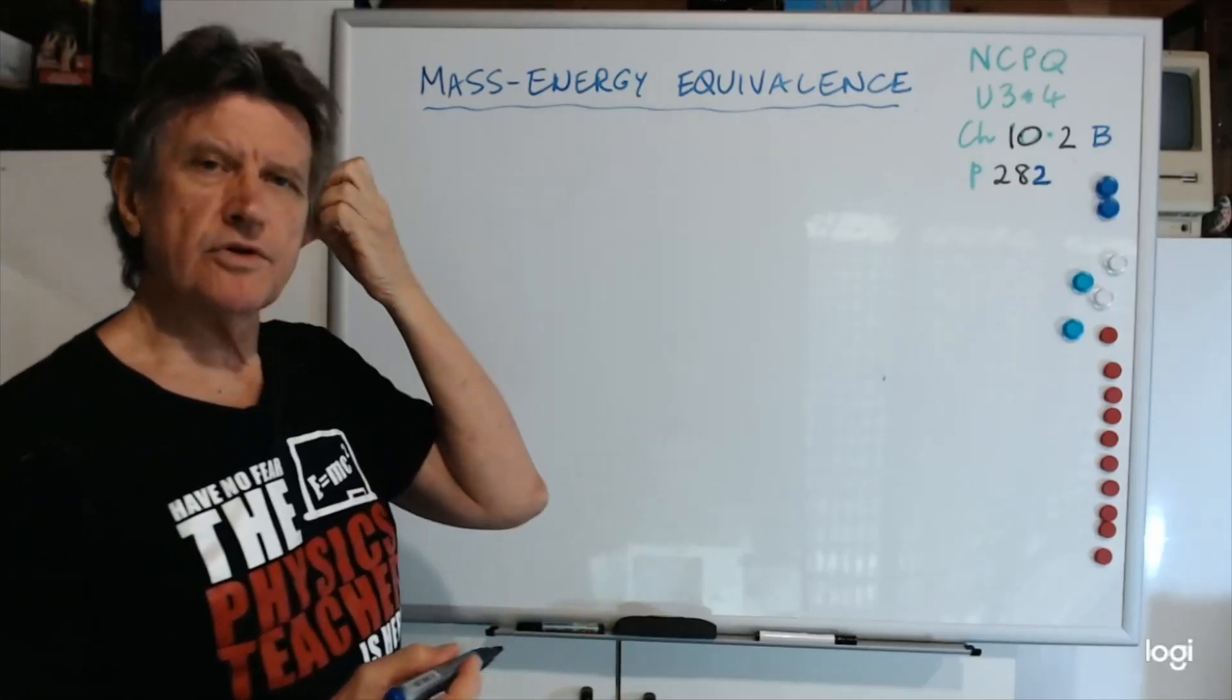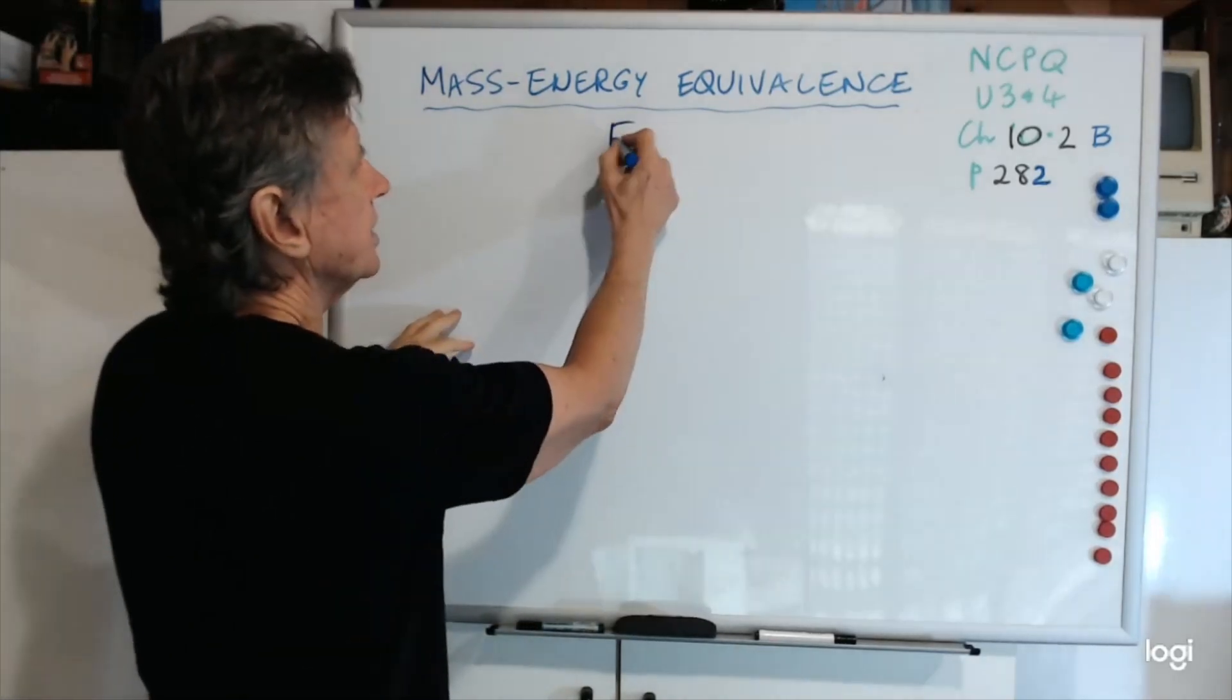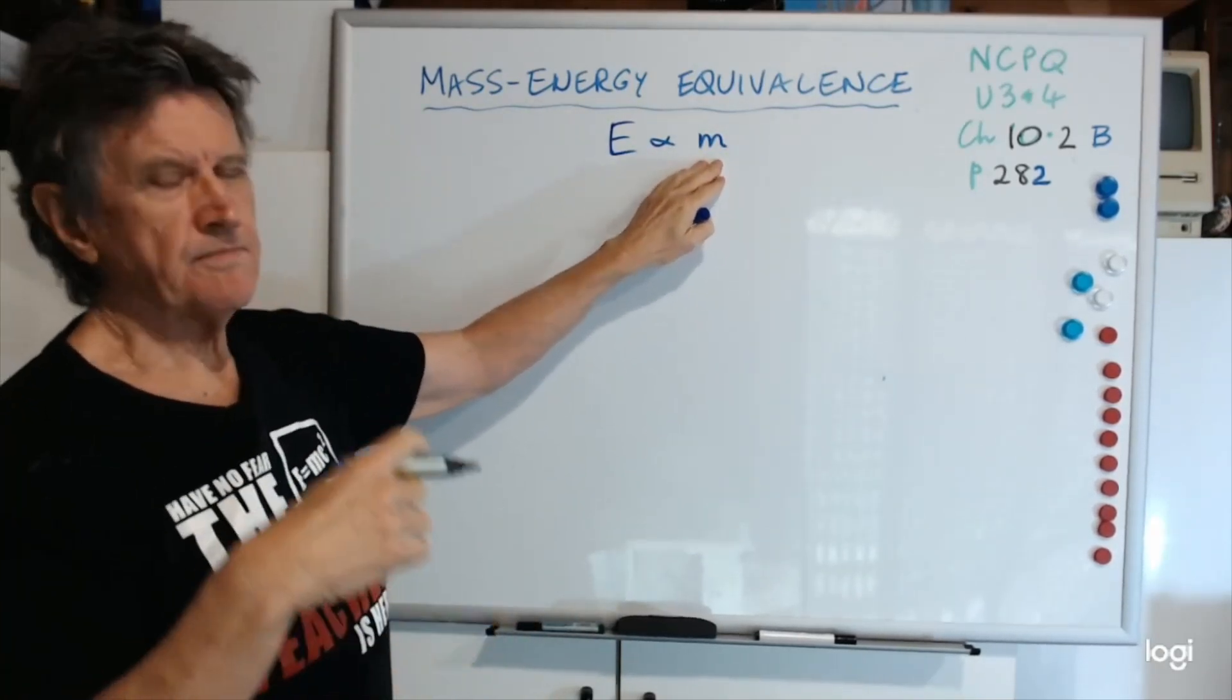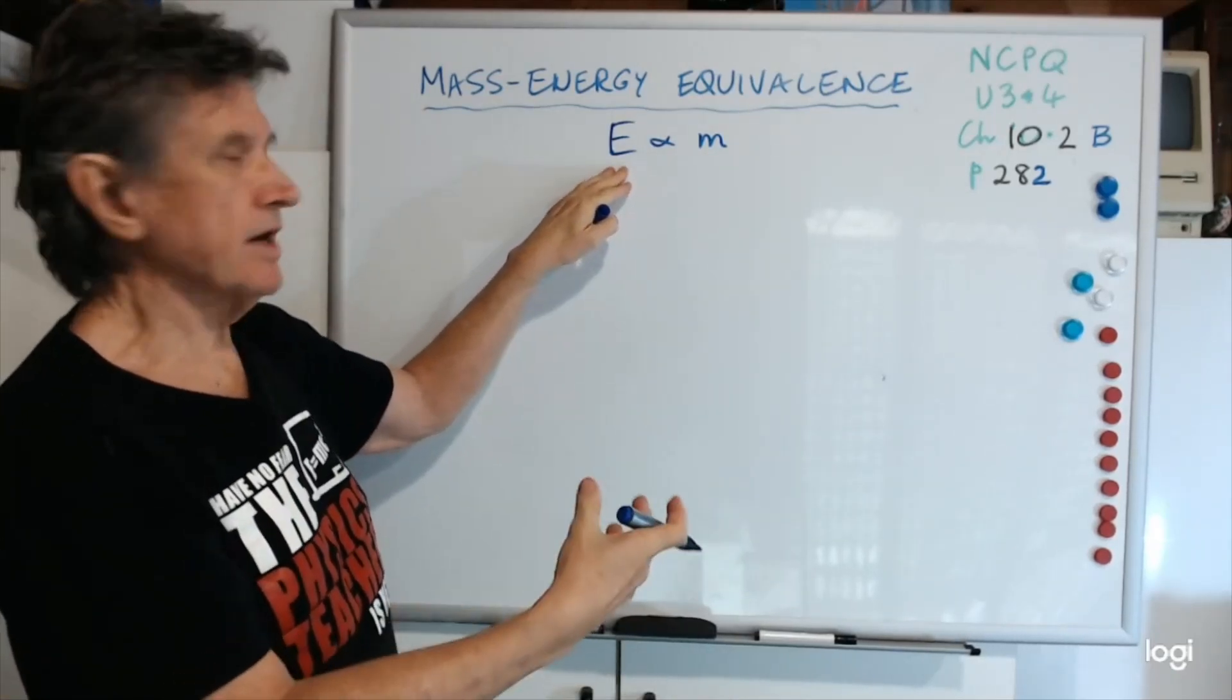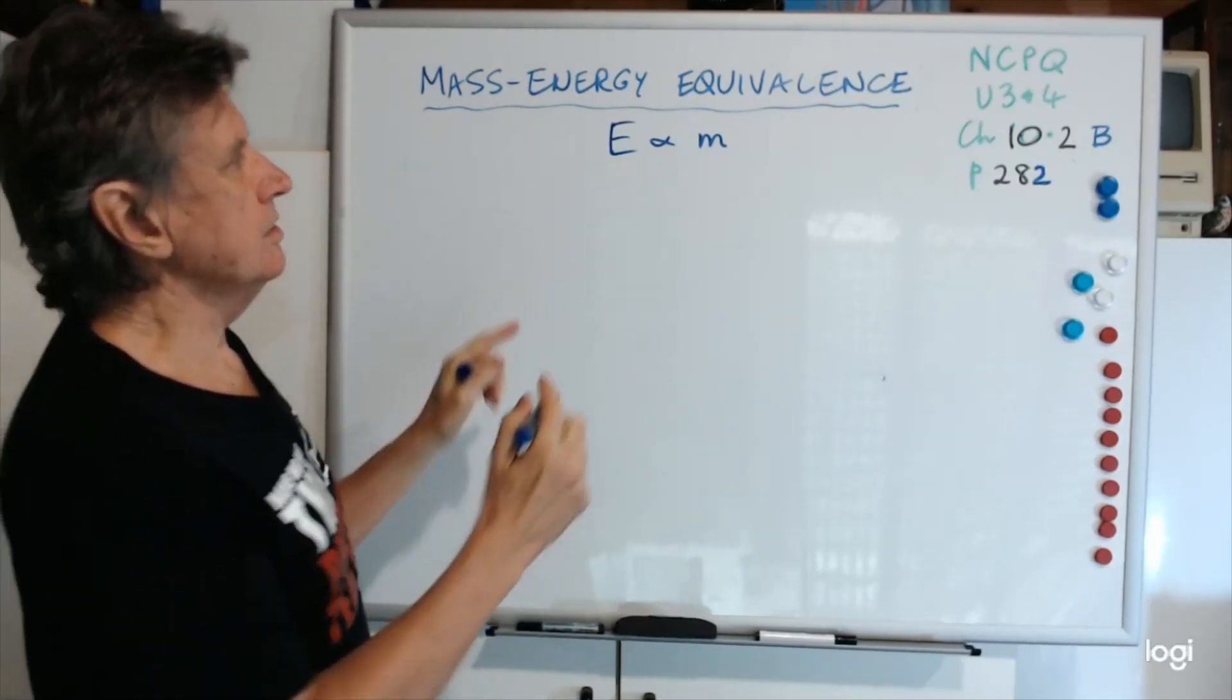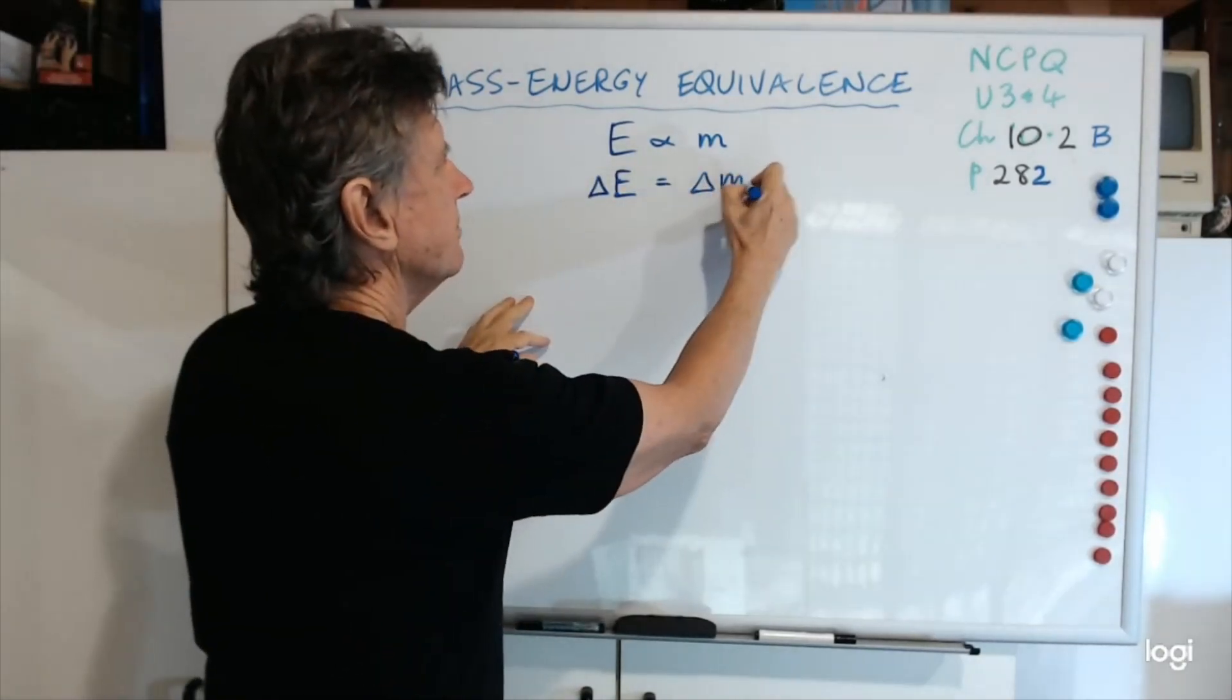Now what you would have learnt back in unit one, which was chapter six, you learned that energy was proportional to mass. In other words, the change in mass of something was proportional to the amount of energy produced or used in that conversion. You used it in this form: delta E equals delta m c squared.